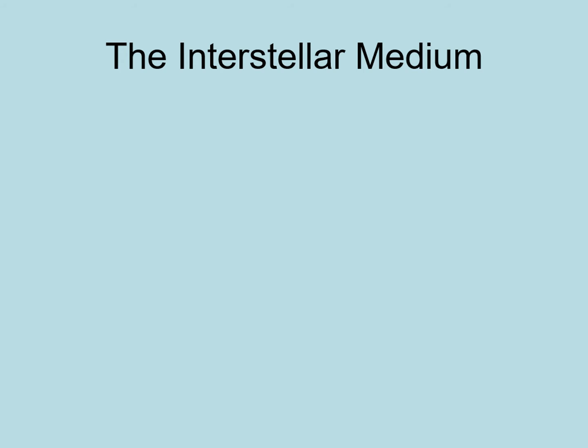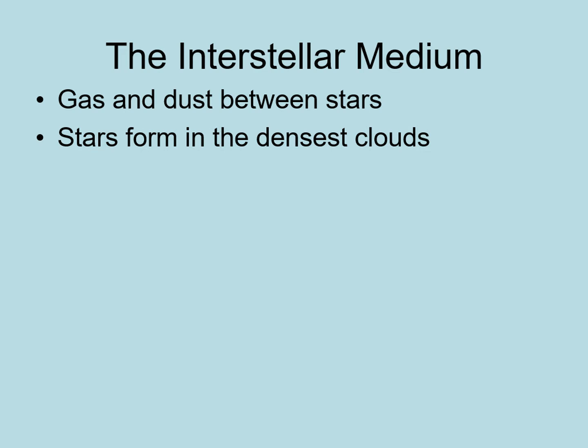Before going through the steps in solar system formation, we should look at where it happens. The space between the stars is not completely empty — there's gas and dust scattered throughout space, which we call the interstellar medium. This interstellar medium is incredibly thin, averaging only one atom per cubic centimeter, much less dense than the best laboratory vacuums. However, it's also clumpy, and it's in these denser clouds that star formation occurs.